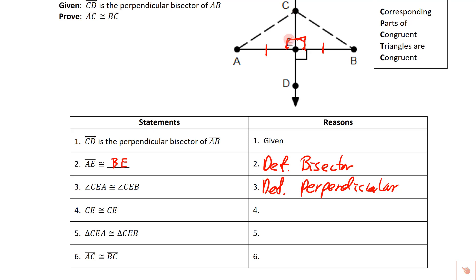We know this side is congruent to this side, and this angle is congruent to that angle. But what we need to prove these two triangles congruent is another side. CE is congruent to CE — that's the fact that CE is congruent to itself. It's the same line used on both sides, so it's congruent to itself, and that is the reflexive property.